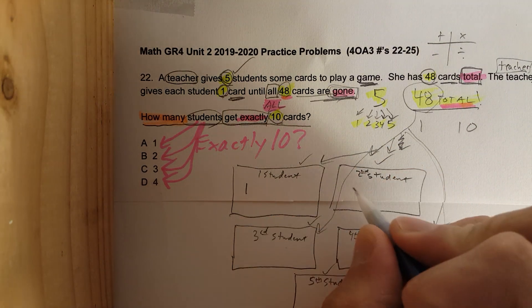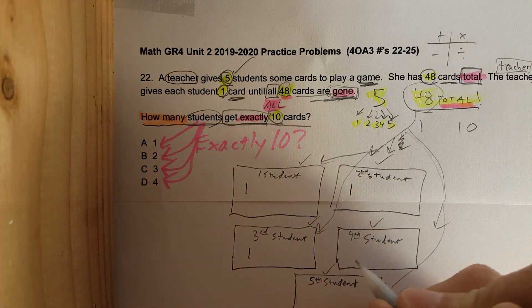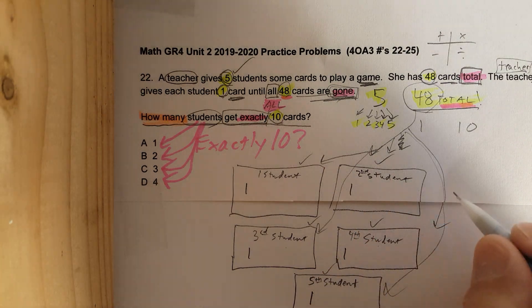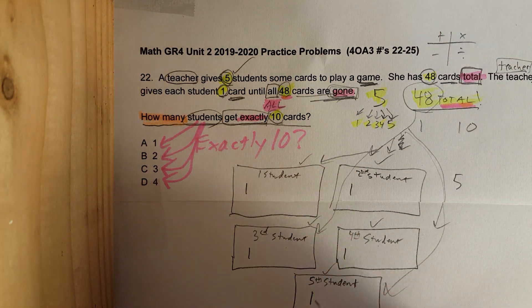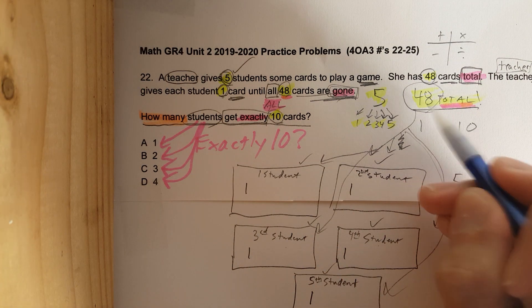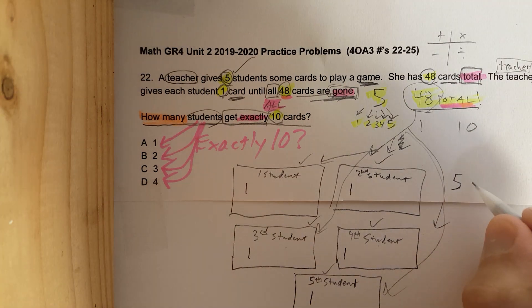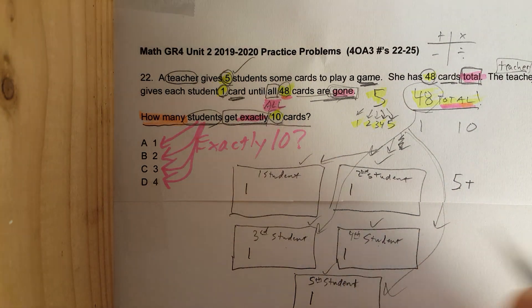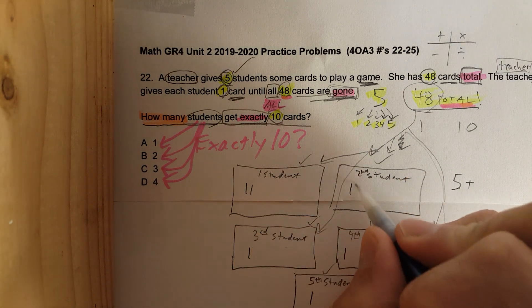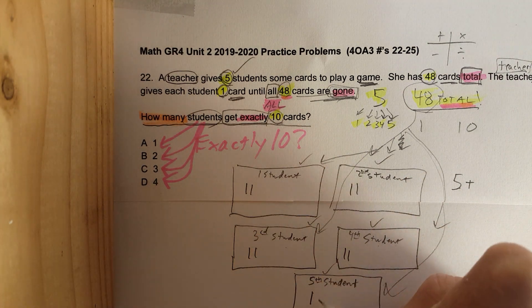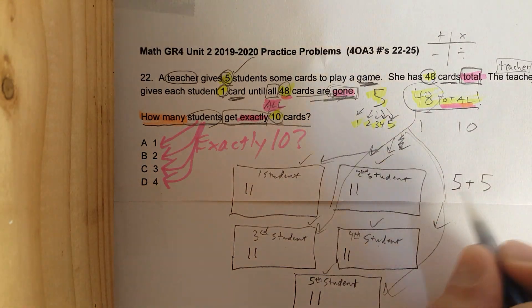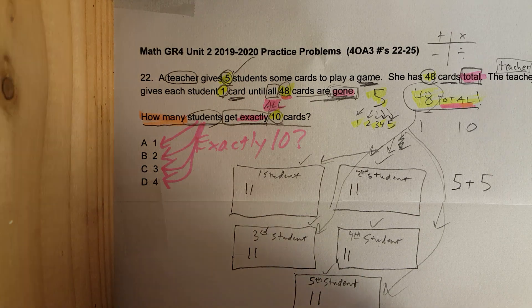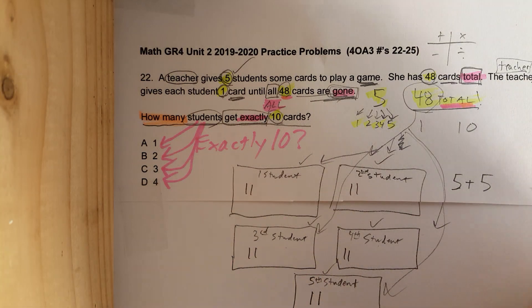Teacher gives out one card to each student. Right now that would be five cards: one, two, three, four, five. We need to get to 48, so let's keep going. Just simple addition like you've been doing since kindergarten. Another card is given to each student, and I'm just representing each card as tally marks. So right now 10 cards have been distributed. You can see: two, four, six, eight, ten. Five plus five is ten. Let's keep this process going until we get to 48.